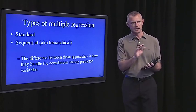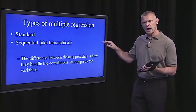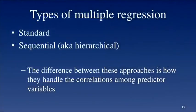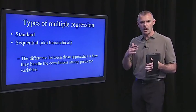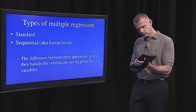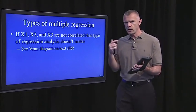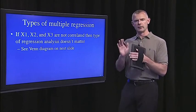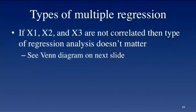The last thing in this segment is the difference between two types of approaches with multiple regression: standard, where all predictors are entered together, and sequential, which you may see referred to elsewhere as hierarchical regression — I'm avoiding that term to avoid confusion with hierarchical linear models. There's also a stepwise approach, but I'm just discussing standard and sequential here. If the predictors themselves are not correlated — if they're orthogonal to one another — then it won't matter which approach you use.